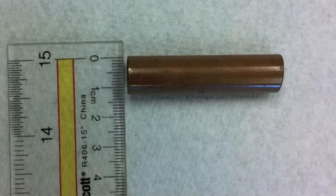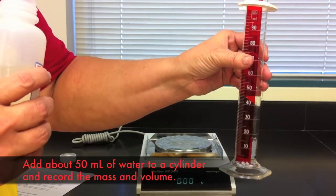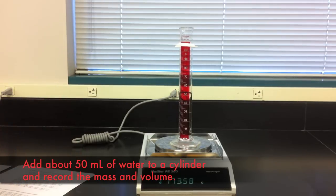A simpler and more accurate measurement of the volume of a solid can be achieved through displacement. To do this we'll take a larger graduated cylinder and fill it with about 50 milliliters of water.